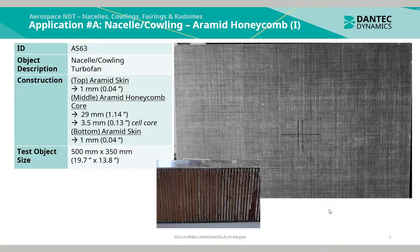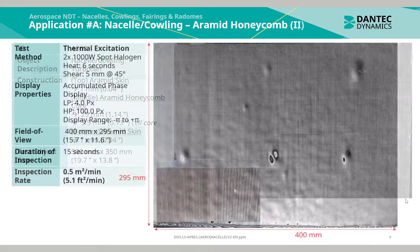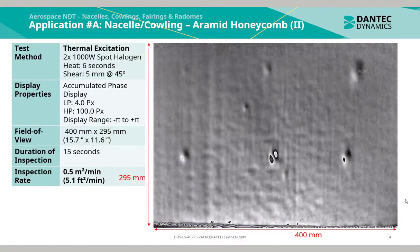This is a reference panel of a nacelle for a turbofan engine. The construction is an aramid skin of 1mm thickness, an aramid honeycomb core of 29mm thickness, and an aramid skin of 1mm thickness on the bottom. The test object size is 500mm by 350mm. This application was inspected through thermal excitation using two 1000W spot halogen heat lamps applied for a duration of 6 seconds.